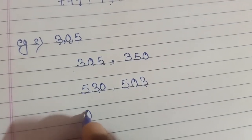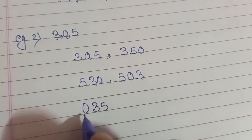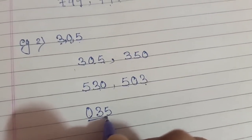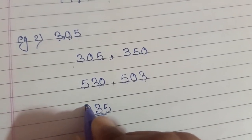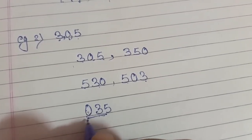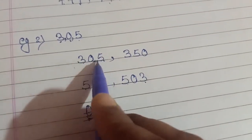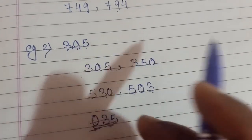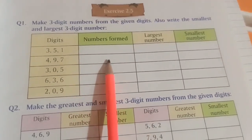Now if we take 0 at the hundreds place, we get 035, but this is not a three-digit number — it becomes a two-digit number. Therefore we will not take 0 at the hundreds place because zero has no value before any number. So only four numbers will be formed with digits 3, 0, and 5.